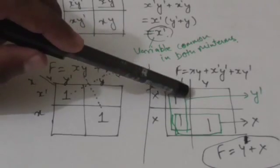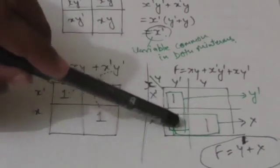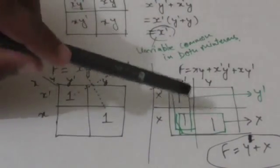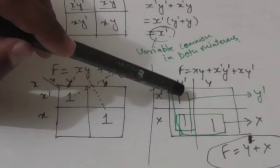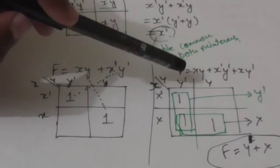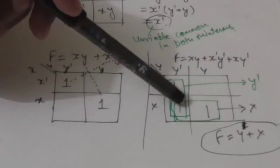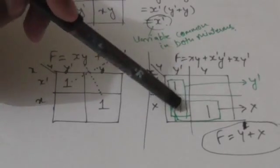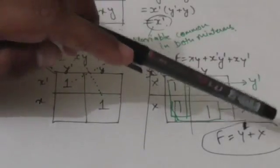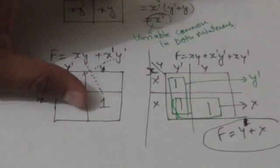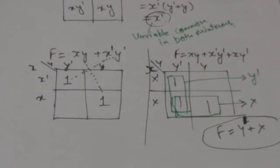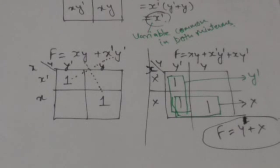Now I make groups of adjacent marked squares. The first group consists of two adjacent squares, and the second group is the other pair. In the first group, the only variable common to both squares is y-naught, so y-naught is included in the function. In the second group, the only variable common to both squares is x, so x is also included. Therefore, the minimized function becomes f = y-naught + x. In this way we can minimize two-variable functions using a two-variable K-map. Thank you very much.